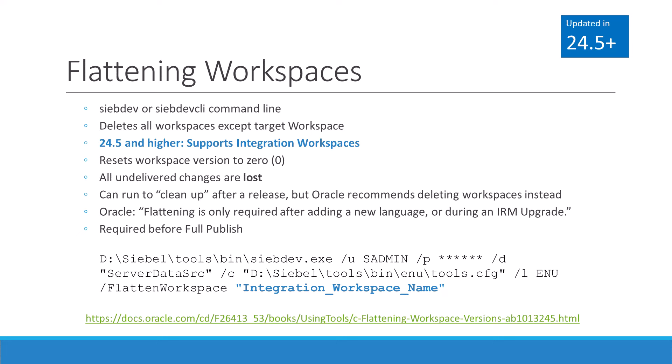If you're familiar with the flatten workspace command, you'll know that it deletes all workspaces before main and resets the main version to 0. With 24.5, the command line for flattening workspace has been extended so that workspace administrators can reference the name of any integration workspace. If that option is chosen, only workspaces below that integration workspace get obliterated, but other workspaces outside the target integration workspace remain unscathed.